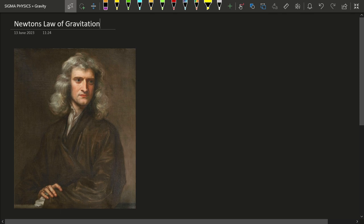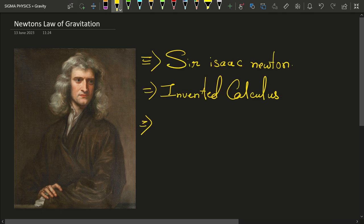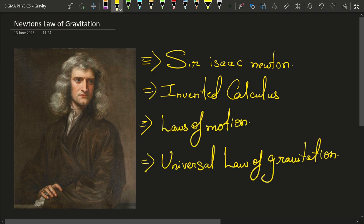Because Newton had developed calculus and put forward his laws of motion, he discovered the universal law of gravitation in the year 1666.